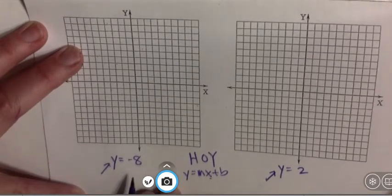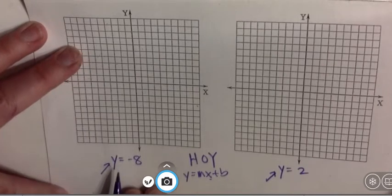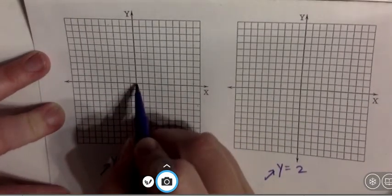What's nice is we know that these are functions because they are horizontal lines and they pass the vertical line test. So let's graph these babies. Let's see how we do it.